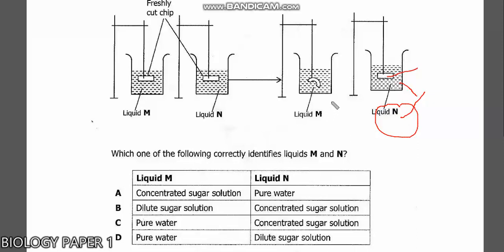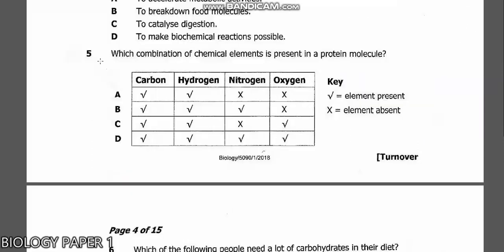For this one, it has reduced inside, so for something to reduce inside means it was losing water into the solution. The potato is losing water into the solution. That means this solution is more concentrated than the concentration in the cytoplasm of the freshly cut potato. That means liquid M is more concentrated, so that is concentrated sugar solution. The answer is A.